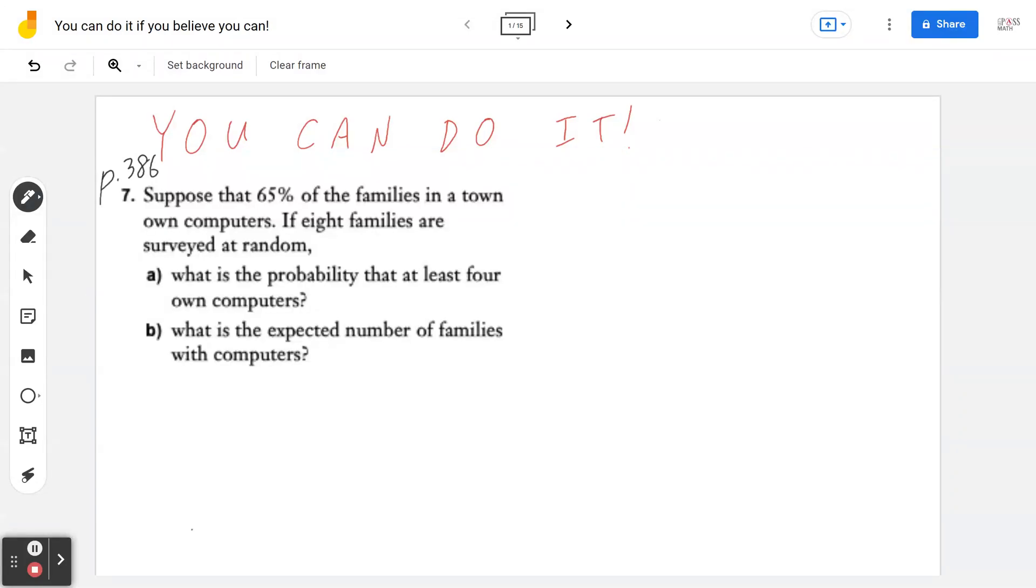Hi everyone, let's take a look at number 7 on page 386. Suppose that 65% of the families in the town own computers. If 8 families are surveyed at random, part A, what is the probability that at least 4 own computers?